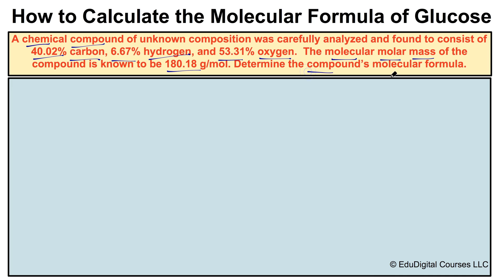We need to determine the compound's molecular formula. All we know about this compound is that it's made up of carbon, hydrogen, and oxygen, and we know the percent composition by mass of each element. We also know that the molecular formula has a molar mass of 180.18 grams per mole.